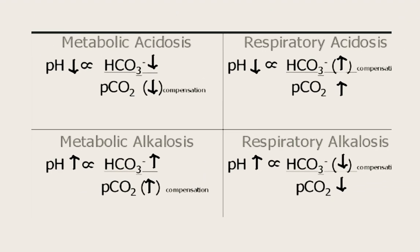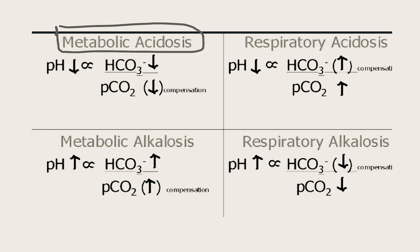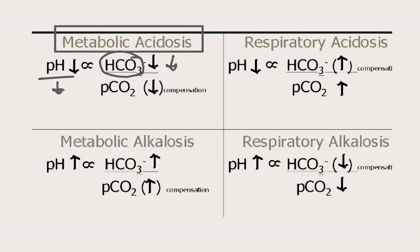In metabolic acidosis, the pH will reduce first. Then, since bicarbonate represents the metabolic component, bicarbonate will also reduce. During compensation, the partial pressure of carbon dioxide will be reduced to bring pH back toward normal. So in an uncompensated state: pH reduces and bicarbonate reduces, but no change in pCO2. When compensation occurs, pCO2 also reduces.